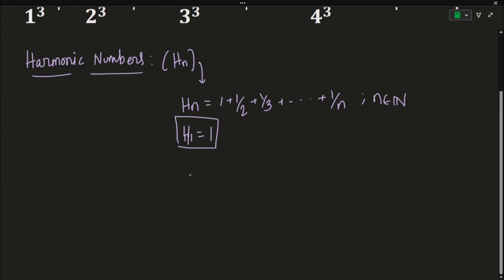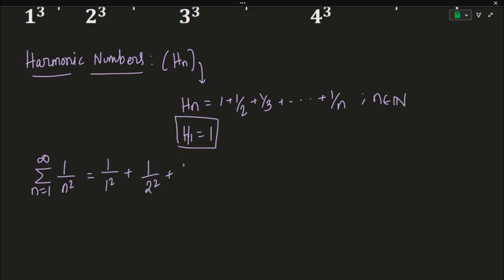We also need another result from previous problems on this channel: the summation from n=1 to infinity of 1/n², which can be written as 1/1² + 1/2² + 1/3² + ... up to infinity. This connects with the famous Basel's problem and equals π²/6. We have proved this before. Equipped with these two results, let us try to evaluate the sum.